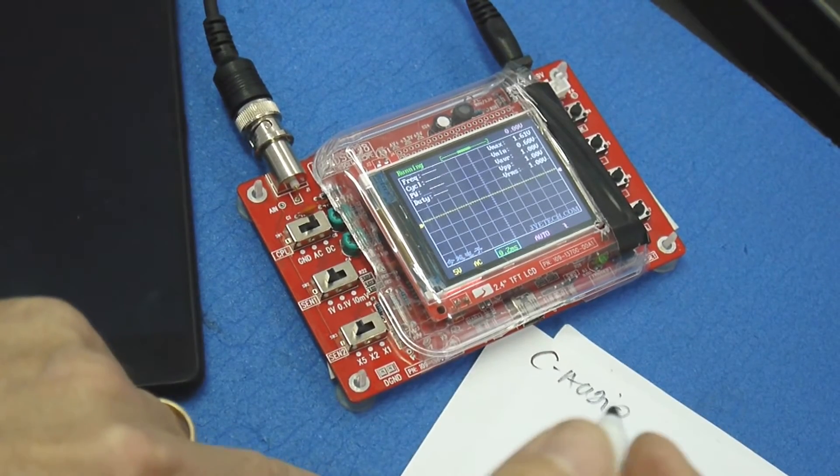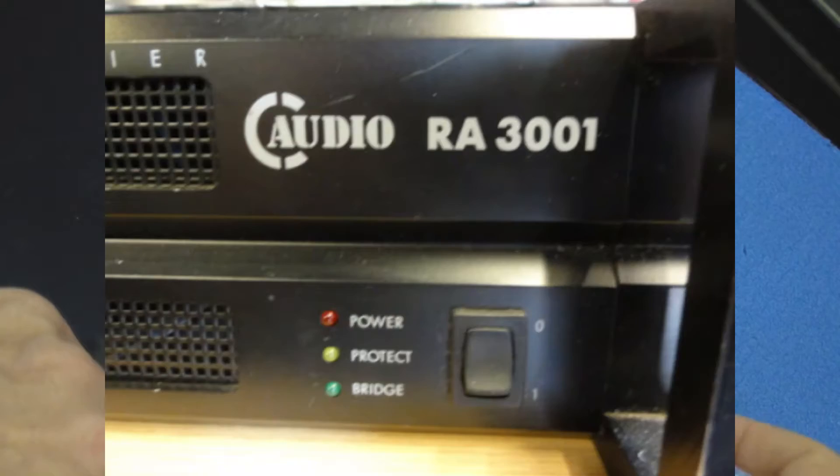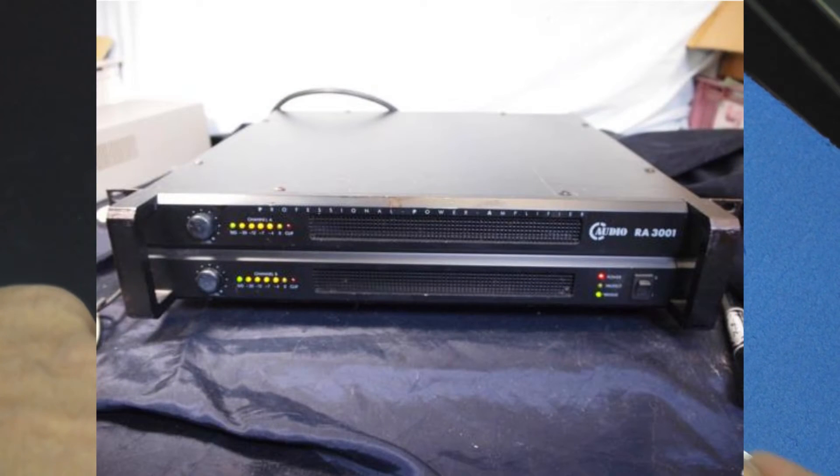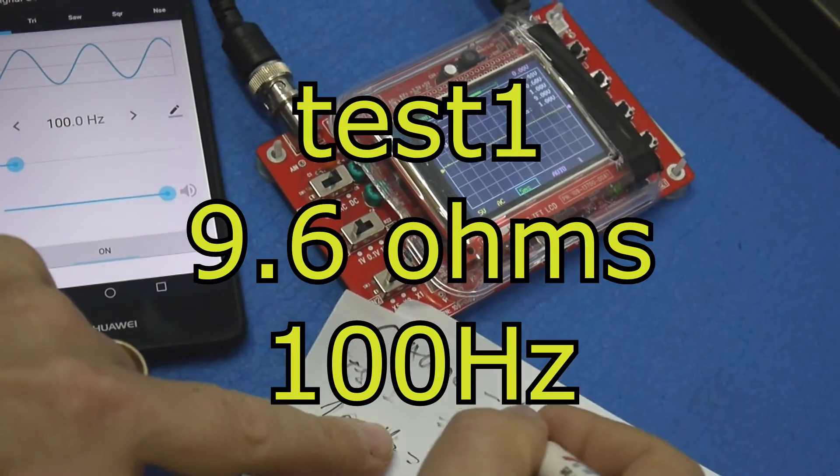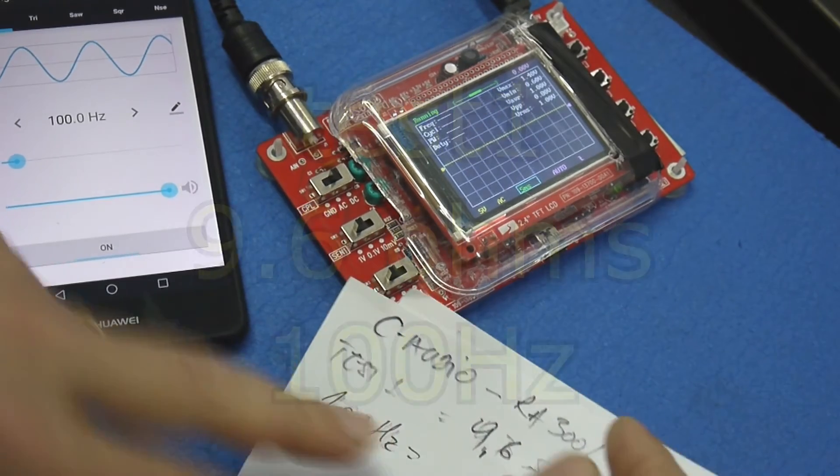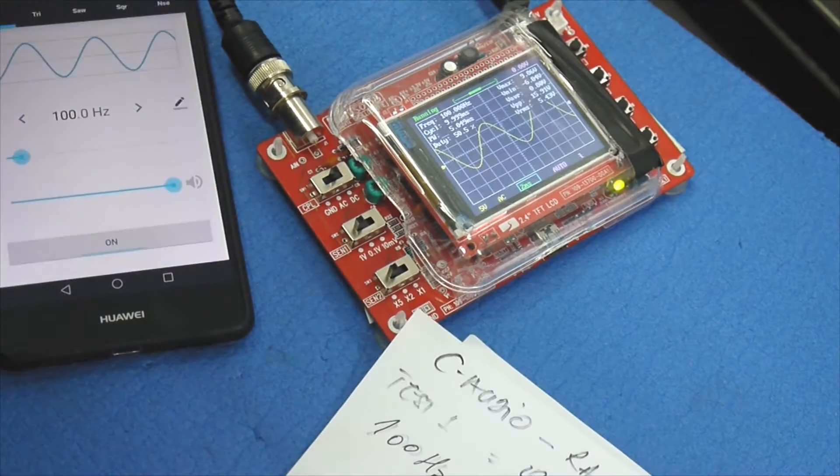Okay guys, a new day, a new project. We're gonna have a power test for a C Audio RA 3001 power amplifier. So we got here with 9.6 ohms.